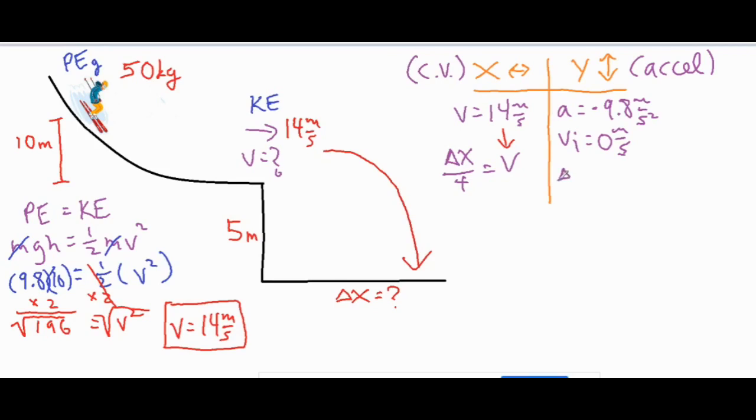Delta Y is negative 5 because the skier drops 5 meters in height. We can use the accelerated motion formula: delta Y equals Vi T plus one half a T squared. We can drop the front half because Vi is zero. Let's plug in our numbers and solve for time.